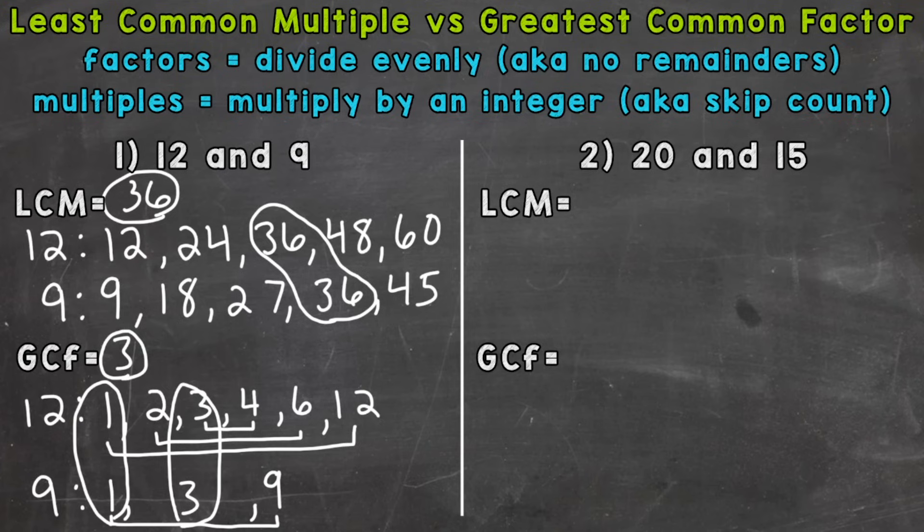Now as far as spacing and writing out those factor lists, you'll get much better at those the more you do. So let's move on to number 2 where we have 20 and 15. So least common multiple first. So we'll write out the multiples for 20 and 15.